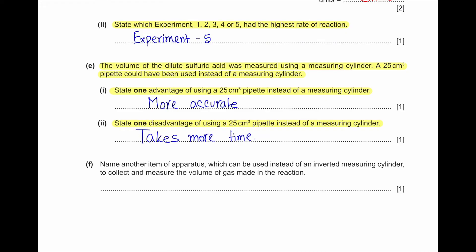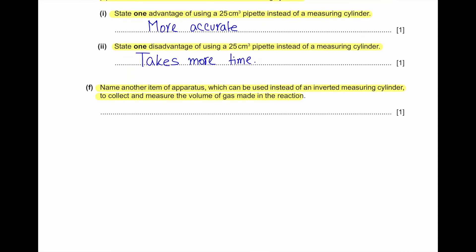Part F: Name another item of apparatus which could be used instead of an inverted measuring cylinder to collect and measure the volume of gas made in this reaction. We could have used a gas syringe.